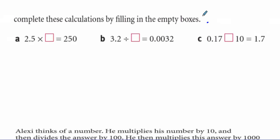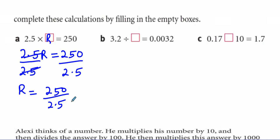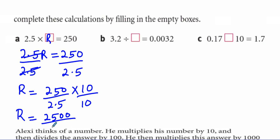Complete this table by filling in the empty boxes. Put the unknown as letter 'a': 2.5 times a equals 250. Divide by 2.5: a equals 250 divided by 2.5. There is one decimal place, so multiply top and bottom by 10: a equals 2,500 divided by 25, which equals 100. So here you need to multiply by 100 to get 250.